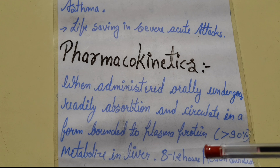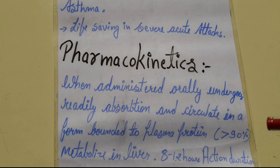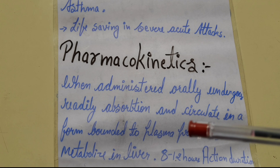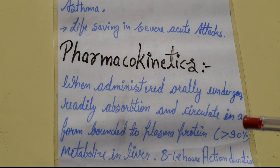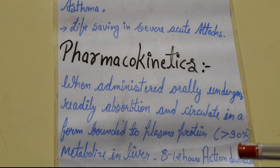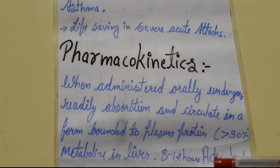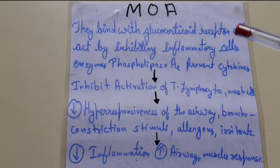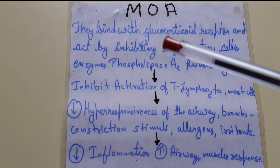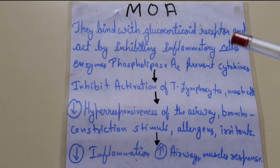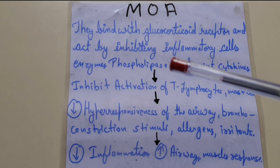When corticosteroids are administered orally, absorption occurs very quickly and they circulate throughout the body. They are more than 90% bound to plasma proteins. The action duration is 8 to 12 hours in the liver.